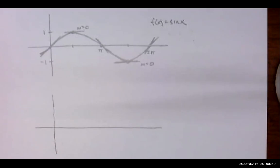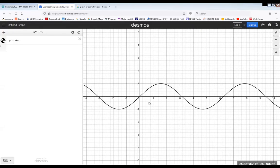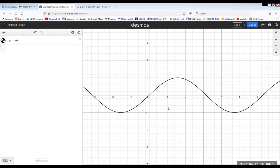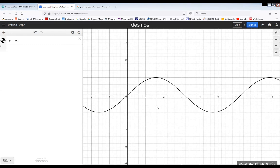I'm going to jump over to Desmos. Here I've got the graph of sine of x. There's the first period, with 2π about right there.